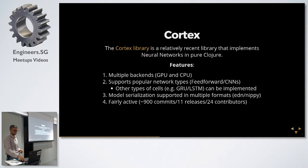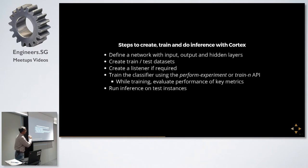What we'll do now is walk through the steps of using Cortex to walk through a machine learning pipeline. These are the basic steps which we'll go into in detail later. We first define a network with an input layer, one or more hidden layers and an output layer. We'll create a dataset. If it has a test split we'll use that, otherwise we'll arbitrarily find some instances and place them in the test dataset. We'll create a listener if required, and then we'll train the classifier using one of the APIs. While training we can evaluate the performance, see if it's doing well or if it's not learning at all. Finally we'll use it to run inference on test instances.